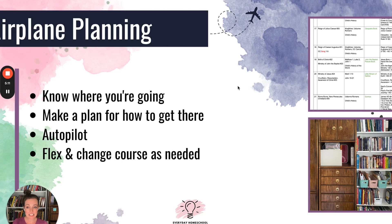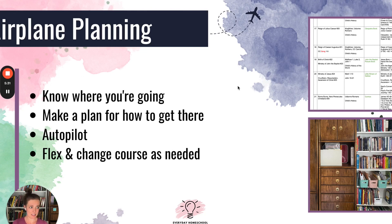You're going to need to flex and change course during your route as needed. Maybe you start something and your kid picks it up way faster than you expected — don't keep trudging through it making them do something they already know. Or maybe it takes them way longer than you expected and you need more practice. My fourth child has been the slowest to learn to read, but he's not my first, so I'm not worried. He just needs more practice than I expected — that's just changing course as needed throughout the year.